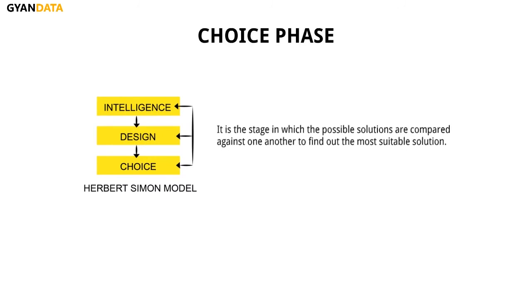A lot of creativity and innovation is required to design solutions. The choice phase is the phase in which possible solutions are compared against one another to find out the most suitable solution. The best solution may be identified using quantitative tools like decision tree analysis, or qualitative tools like the six thinking hats or force field analysis. Making the choice is a very difficult process, because each solution presents a scenario and the problem itself may have multiple objectives. Uncertainty about outcomes and scenarios makes the choice of a single solution difficult.